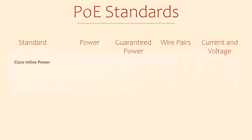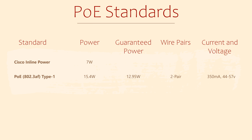Cisco originally introduced powered interfaces over 20 years ago. It was called Cisco Inline Power and it could deliver up to 7 watts of power per port. The maximum port speed for this standard was 100 meg. This was a Cisco-only technology, so if you wanted it you needed to have a Cisco switch. It was a pretty good idea though, so since then the IEEE has released several PoE standards that any vendor can use. The original PoE standard was 802.3af, which is now known as Type 1 PoE.